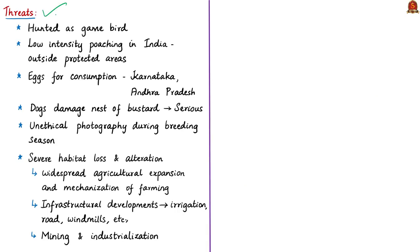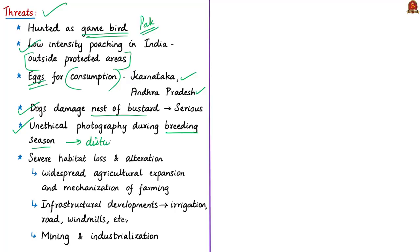Historically, Great Indian Bustards have been hunted as a game bird and hunting continues in neighboring Pakistan. Low-intensity poaching still persists within India, mostly outside protected areas. Collection of Great Indian Bustard eggs for consumption is prevalent in parts of Karnataka and Andhra Pradesh, directly threatening breeding success. Domestic and free-ranging dogs have caused serious damage to nests. Unethical photography during the breeding season is a constant source of disturbance. The species has also faced severe habitat loss from agricultural expansion, mechanization of farming, infrastructure development, mining, and industrialization.